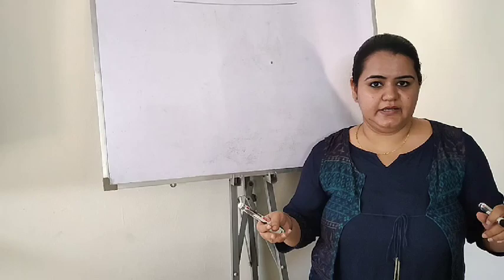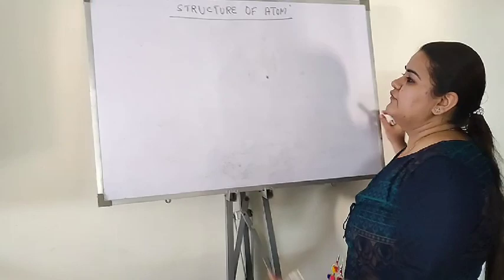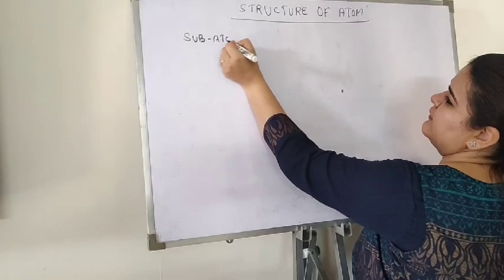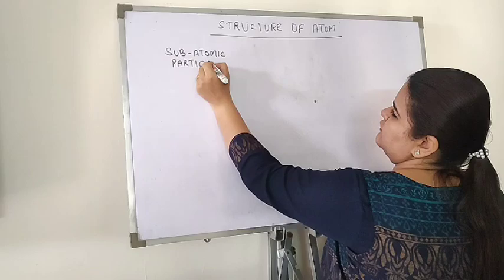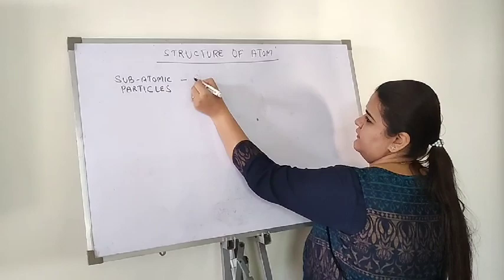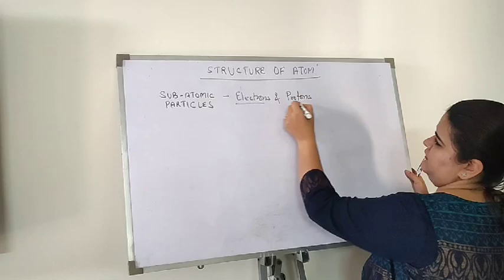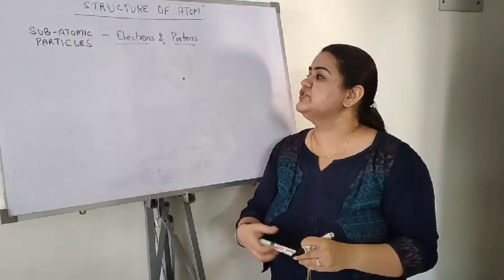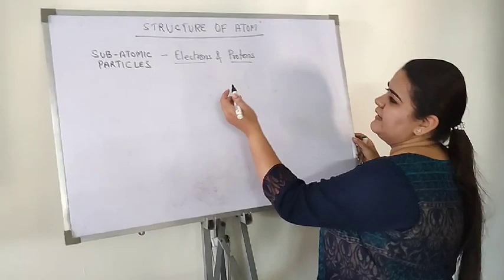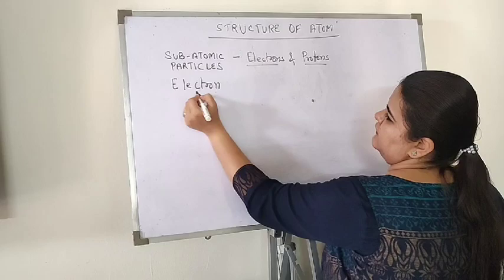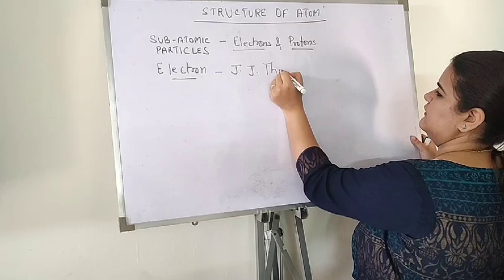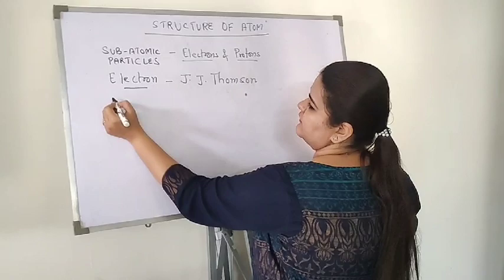Before moving ahead, we should know what these two subatomic particles are. The subatomic particles discovered by scientists are electrons and protons. Electron was discovered by J.J. Thomson, and proton was discovered by Rutherford.